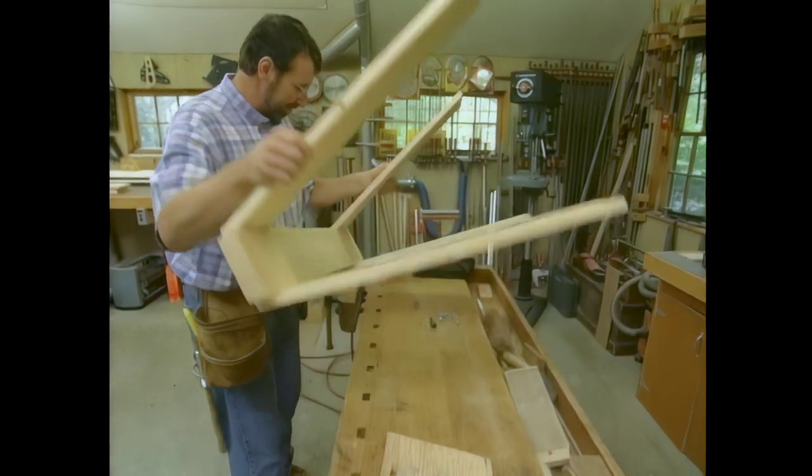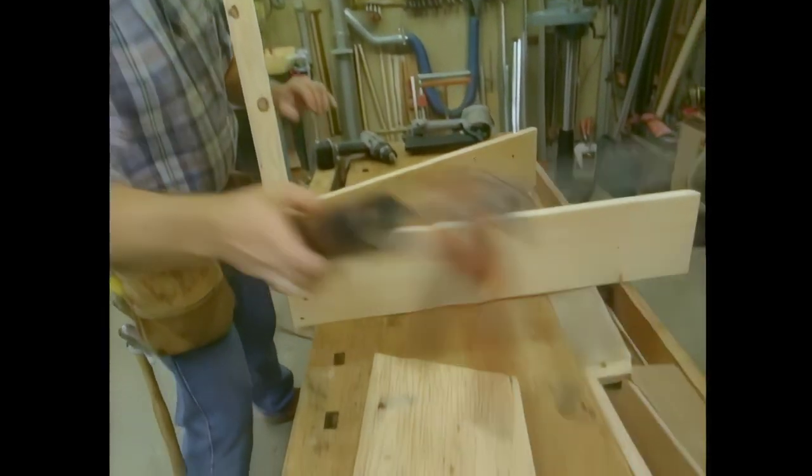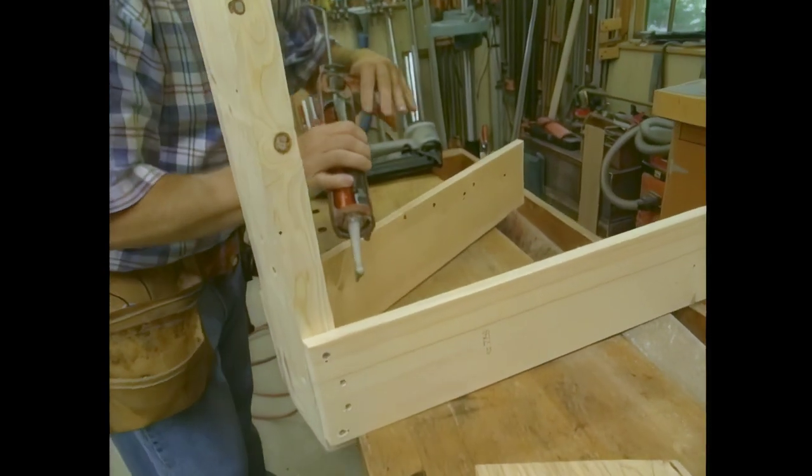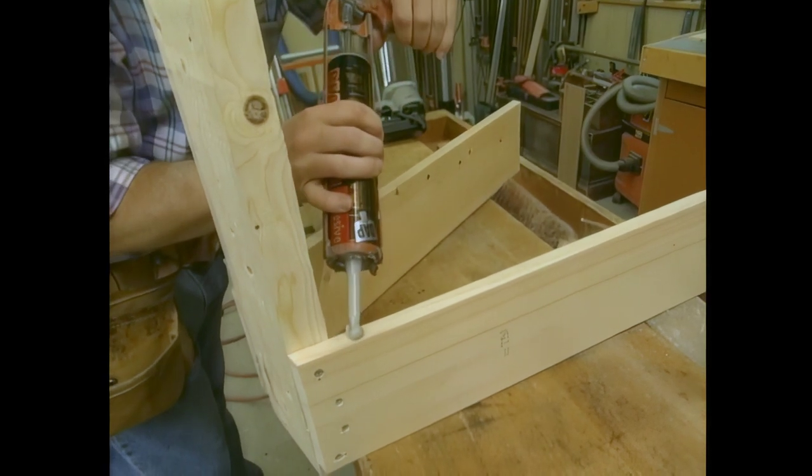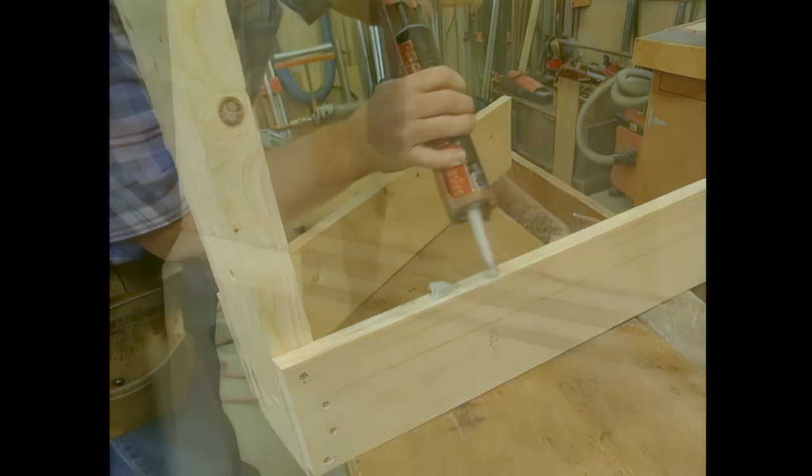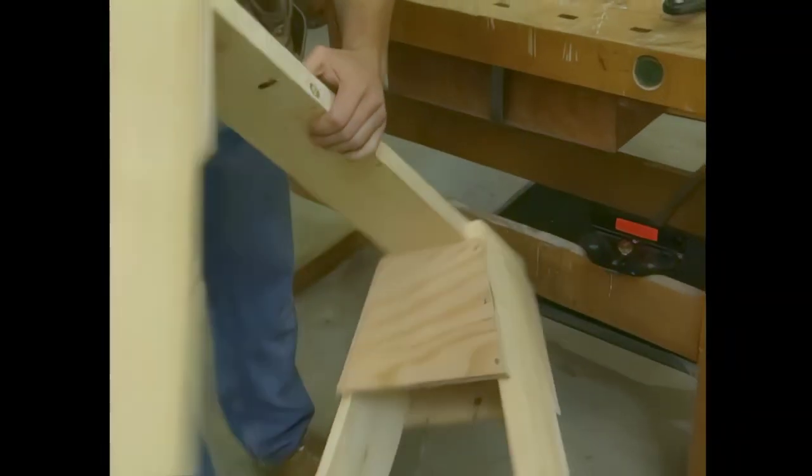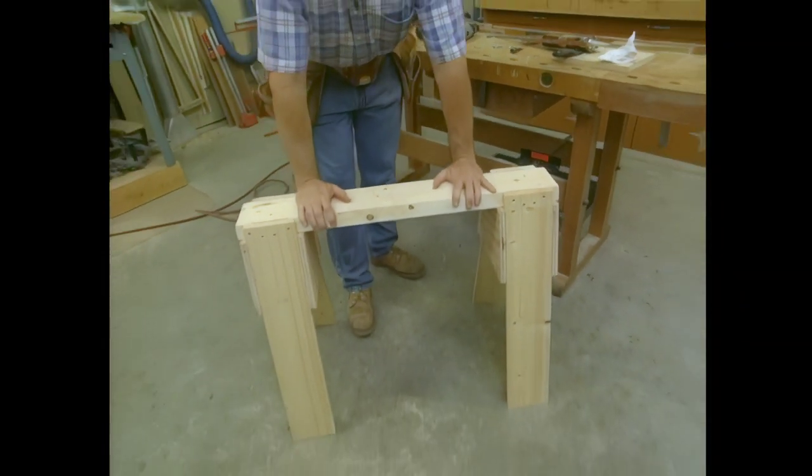Okay, now we'll put the gussets on, on the inside first. Once again, a little bead of construction adhesive to strengthen the joint. And we'll attach them with some screws. Okay, that's one. Now we'll assemble the next one.